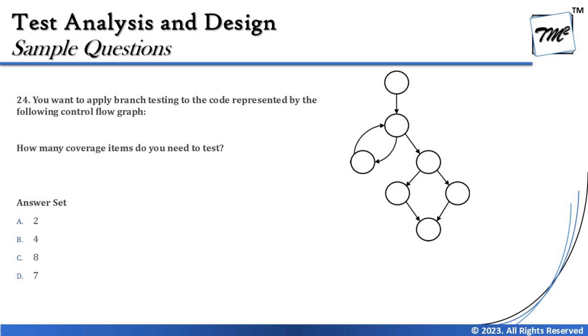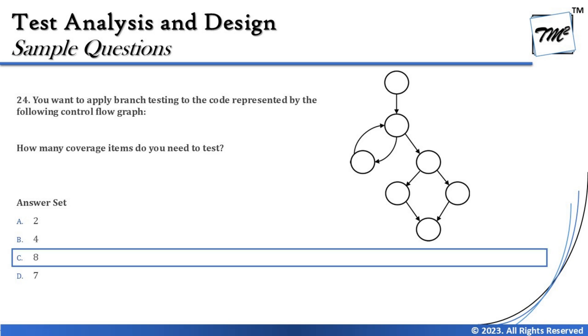The right answer is C — eight. Eight test cases are required to test all branches because there are eight branches in the given flow chart. Sometimes it is this simple, but don't always expect that — it can be complicated as well. We are covering a variety of questions to build your confidence. That's all from this tutorial; feel free to comment below with any questions.